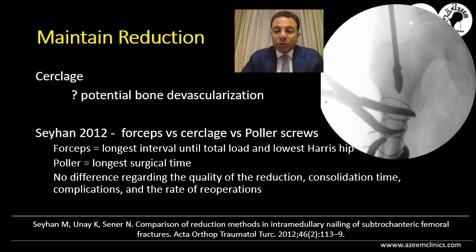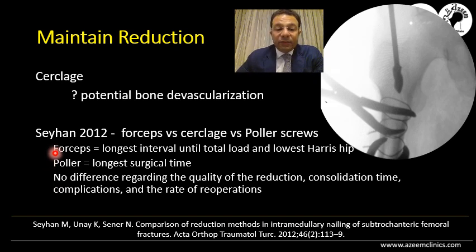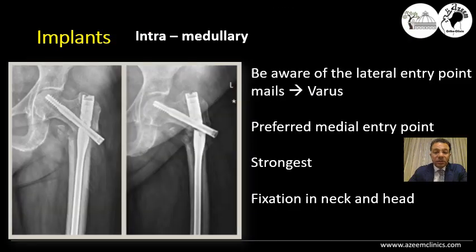Maintaining the reduction is a crucial and very difficult step. Usually we maintain the reduction by the footprints of reduction tools — clamps, sometimes polar screws, and sometimes cerclage wires. The most commonly used method is the cerclage wire; however, too much devascularization while applying the cerclage wire is very dangerous and affects the biology of this fracture. Studies comparing forceps, polar screws, and cerclage wires found no difference regarding quality of reduction, consolidation times, and complication rates. So all three work, but the most important thing is to achieve the best quality of reduction with minimal damage to the blood supply and biology.